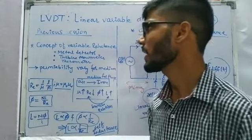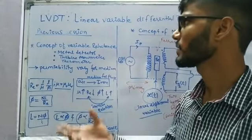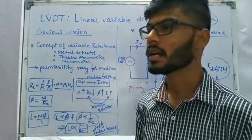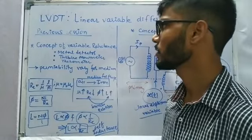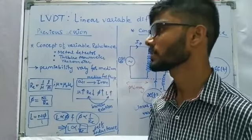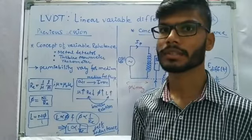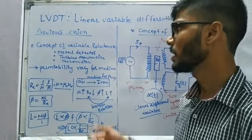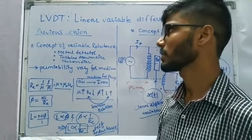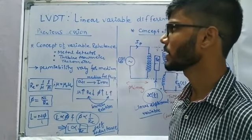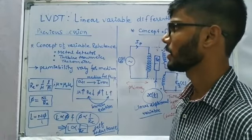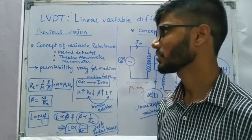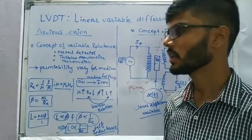Yesterday we had a discussion on the concept of variable reluctance, and based on that particular concept, we were able to discuss three practical applications: a metal detector, a turbine flow meter, and a stegometer.